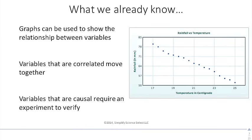You should already know that graphs can be used to show the relationship between variables, and those variables that are correlated move together. If you have variables that are causal, and that causal means that one causes the other, that does require an experiment to verify. Once you establish that causal relationship, you can convert this graph into an equation.